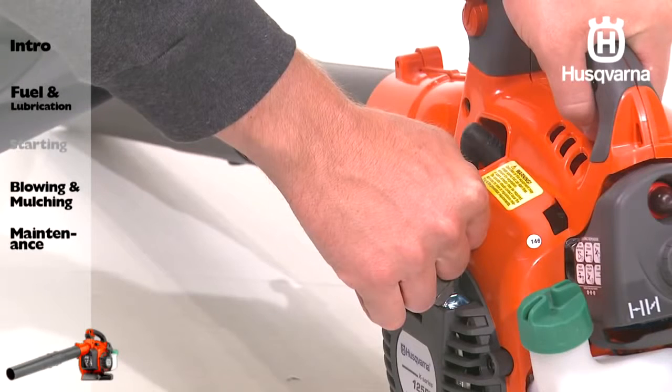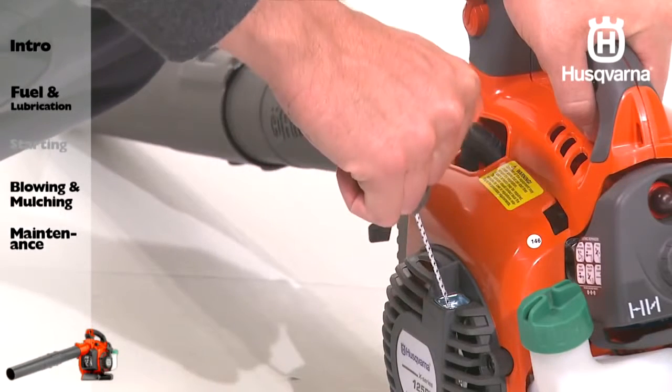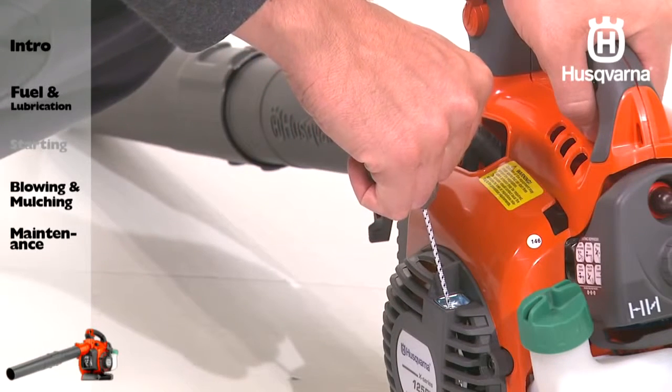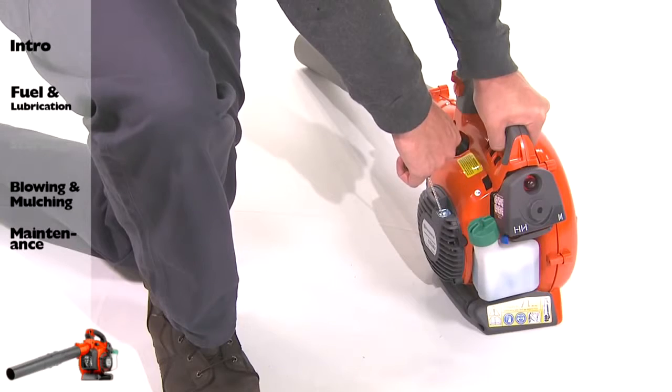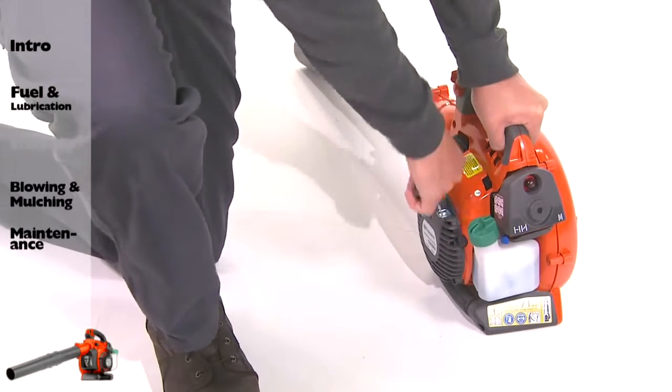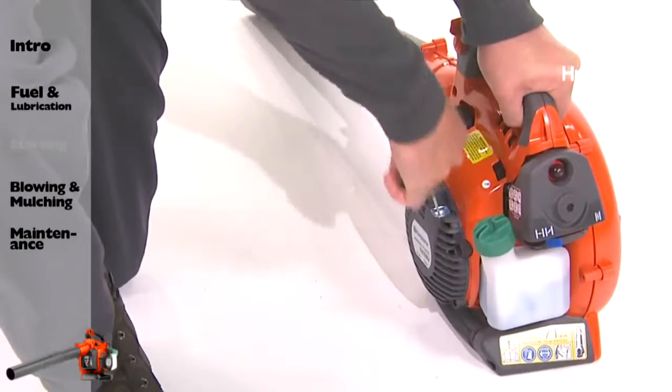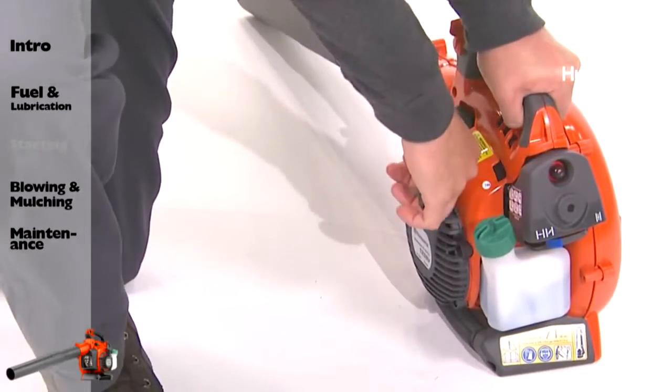Do not squeeze the throttle trigger. Slowly pull out the cord until you feel some resistance, then quickly and powerfully pull the cord. Pull the starter handle until the engine attempts to run, but no more than three pulls.